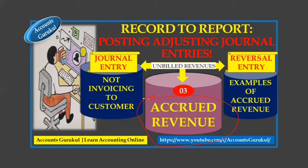We are going to go through actual examples and scenarios to understand what transactions are involved and how to pass the entry. First, we need to understand what is meant by accrued revenue, also known as unbilled revenue. It means you have delivered the services but haven't raised the invoice, and you are closing the month, so you have to recognize that revenue as per accounting standards into the books.